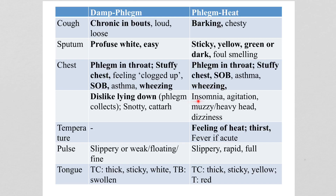From the heat you can also have insomnia and agitation. You can get a muzzy or heavy head — the heat takes the phlegm up into the head — or dizziness. A feeling of heat, and if it's acute, a fever. The pulse is slippery but also rapid and full, and the tongue coat is thick, sticky, and yellow with a red tongue body.